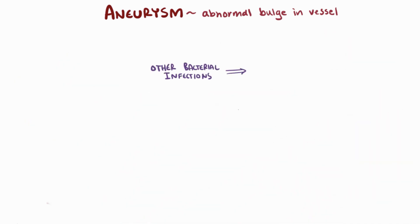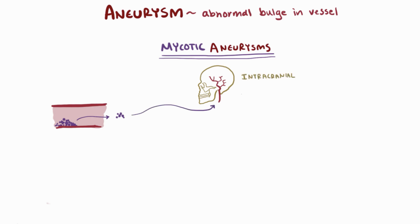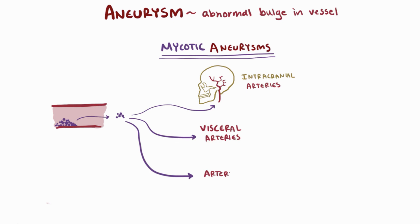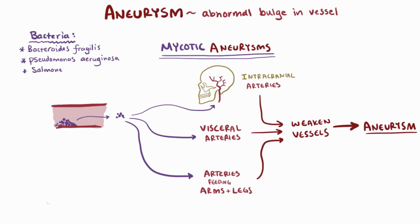Other bacterial infections can also cause aneurysms, which we label mycotic aneurysms. Bacteria from an infection elsewhere in the body can break off and travel in the blood, usually getting stuck in the intracranial arteries, visceral arteries, or arteries feeding the arms and legs, where they enter and weaken the blood vessel walls, causing an aneurysm. Common bacteria include Bacteroides fragilis, Pseudomonas aeruginosa, and Salmonella species. Mycotic aneurysms are also a complication of infective endocarditis, and fungi such as Aspergillus, Candida, and Mucor are also common causes.